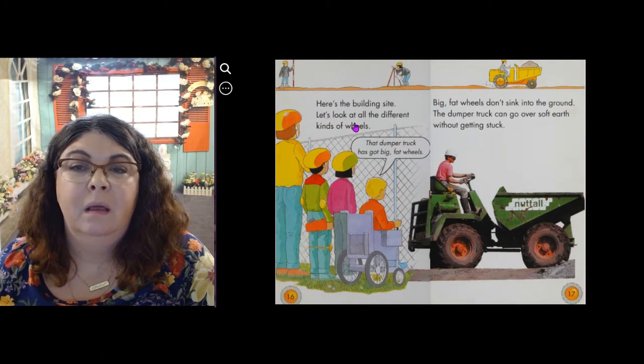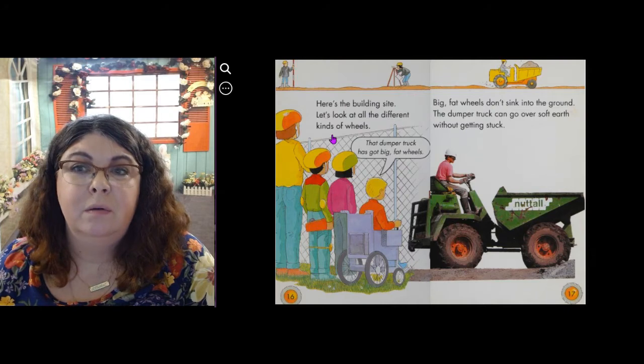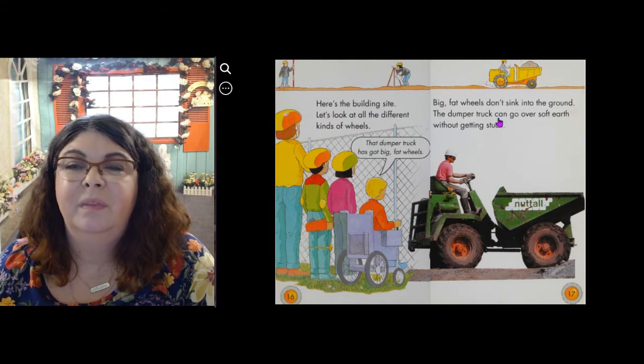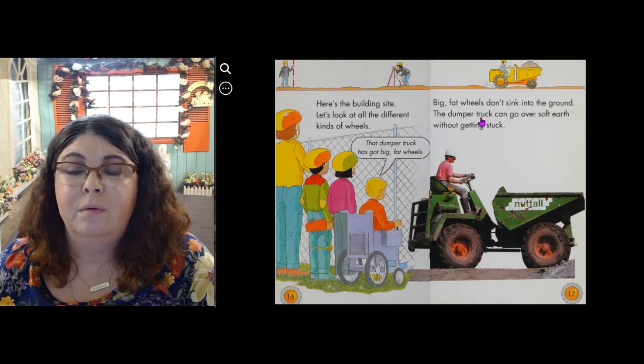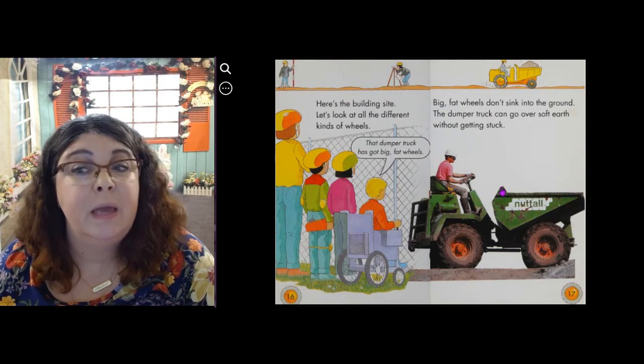Here's the building site. Let's look at all the different kinds of wheels. That dump truck has got big fat wheels. Big fat wheels don't sink into the ground. The dumper truck can go over soft earth without getting stuck.